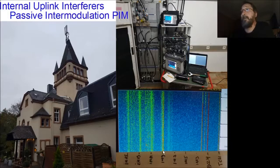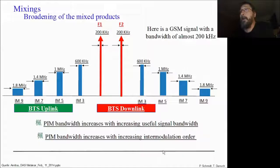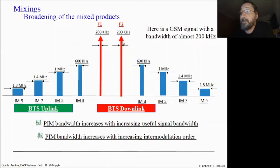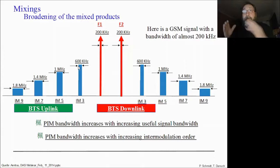If you have small causing signals like a broadcast channel and a traffic channel with a bandwidth of approximately 200 kHz, the intermodulation signals are getting wider because the outer edges of the signals intermodulate with the outer edges, and the inner edges intermodulate with the inner edges. You can imagine this is much more terrible with LTE because LTE is a very wide signal, so we also have a very wide intermodulation product. These are the mixing products.